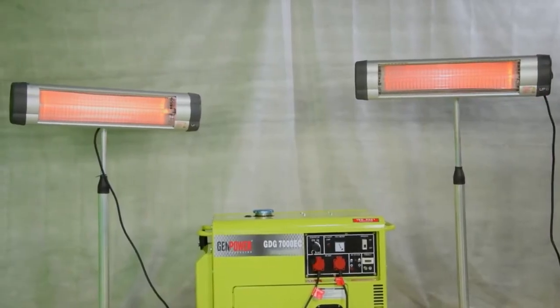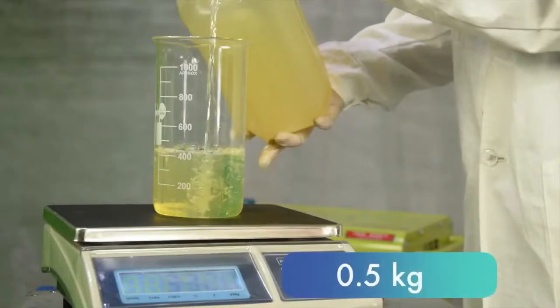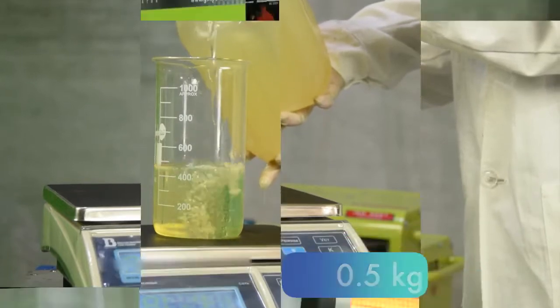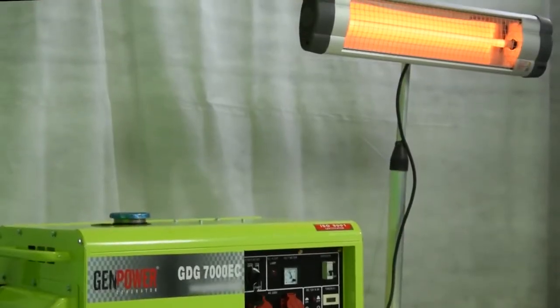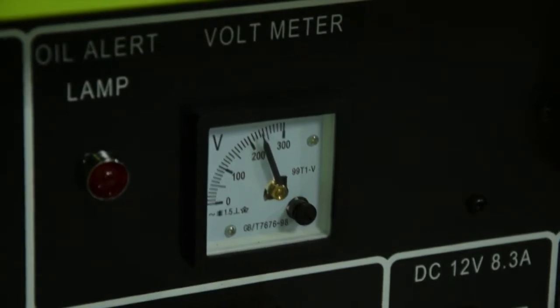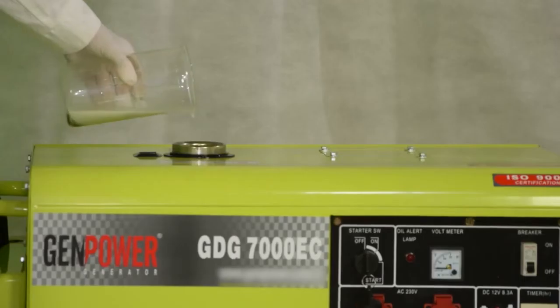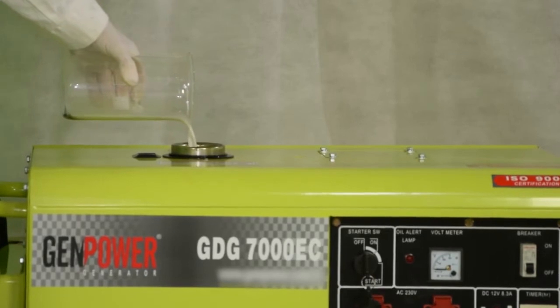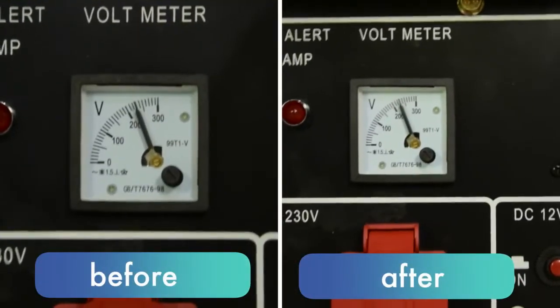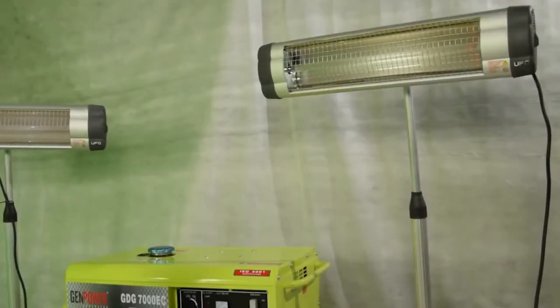We initially filled the generator tank with 0.5 liters of regular diesel fuel and timed the duration of its running, monitoring the indications of the voltmeter under load, then repeated the run using the emulsion. Running time and voltage were practically the same, which brings us to the conclusion that the generator running on emulsion with 15% water performs without power loss.